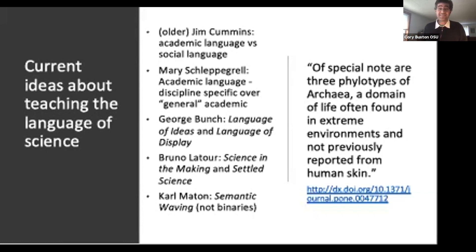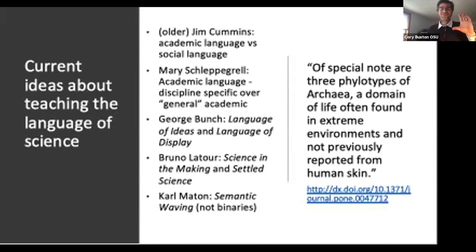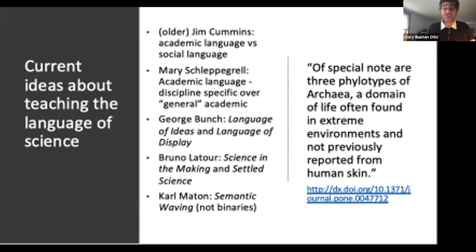What I like about the idea of semantic waving is that it's actually about a continuum — it sees these things as a continuum rather than as binaries, and I think that's a more useful way to think about it. Here's a quote I pulled from a random science journal article: 'Of special note are three phylo-types of archaea, a domain of life often found in extreme environments, and not previously reported from human skin.' Just taking a random sample of scientific language, you can see there are odd words but also a grammatical structure that is not typical of what kids are learning in school.